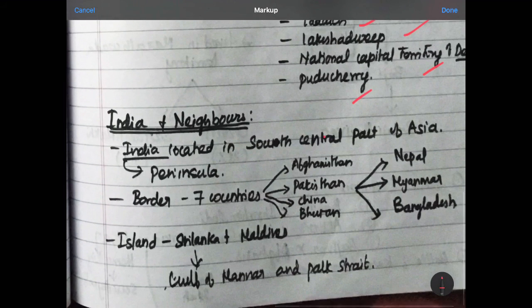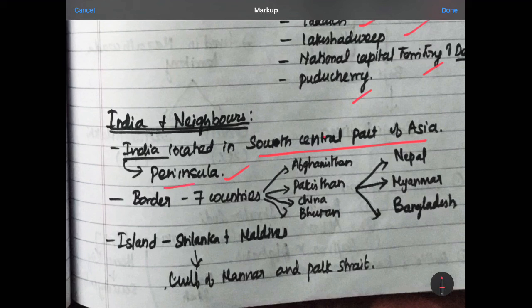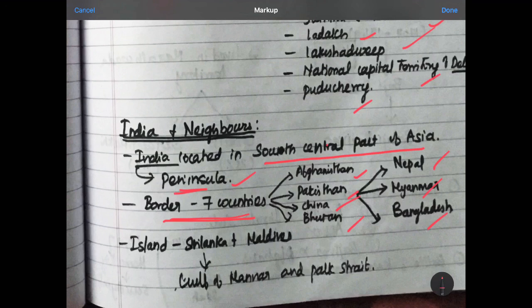India and neighbors. Now, let us see India and neighborhood of India. India is located in south central part of Asia. In Asia, we are located in south central part and India is also called Peninsular Plateau or Peninsular India, Indian Peninsula. Peninsular is nothing but the three sides are covered by water and the fourth side is by land. This is called Peninsular as you know. If all landmass are covered entirely by the ocean or water body is called island. We are Peninsular and the border seven countries. The neighbors via border are seven countries: Afghanistan, Pakistan, China, Bhutan, Nepal, Myanmar and Bangladesh. Our island neighbors are Sri Lanka and Maldives. These are island country who are our neighbors. Sri Lanka is connected to India by Gulf of Mannar and Palk Strait.